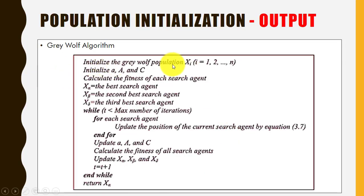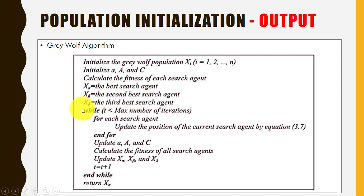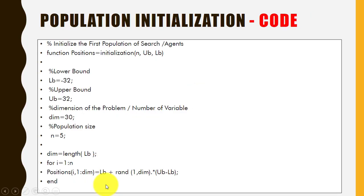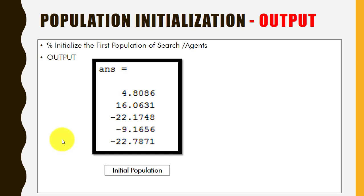The algorithm flowchart works as follows: first, initialize the wolf population; then initialize parameter values; calculate the fitness for each search agent. Here, x-alpha is the best search agent (alpha wolf), the second best is beta, and the third best is delta. We then update positions, calculate fitness values again, and finally print the best solution. The gray wolf population can be initialized using this source code, with specified lower and upper bounds. Here I'm using a population of 5 wolves as an example, and you can see the output — the initial population for the 5 wolves.